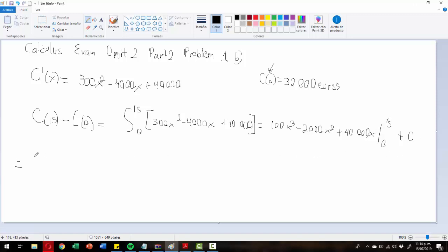So as a result we are going to substitute: 100 times 15³ minus 2000 times 15² plus 40,000 times 15. That's going to be, in our case, 487,500 euros.